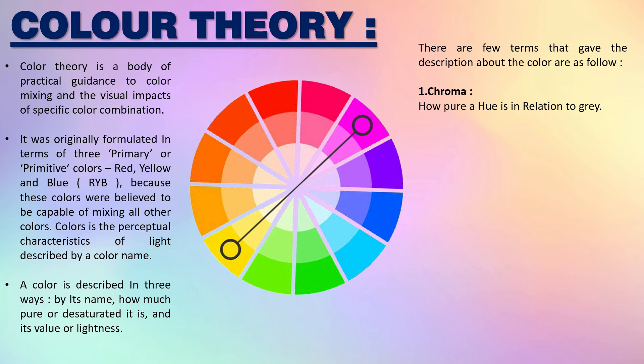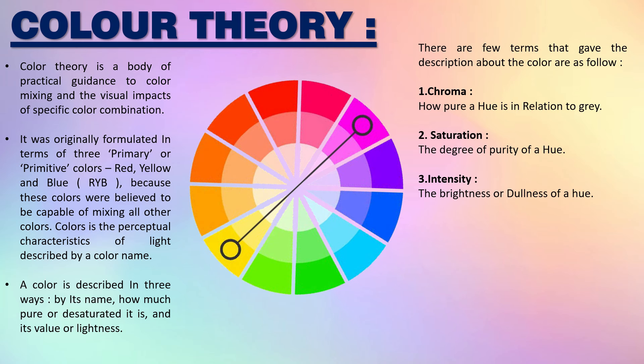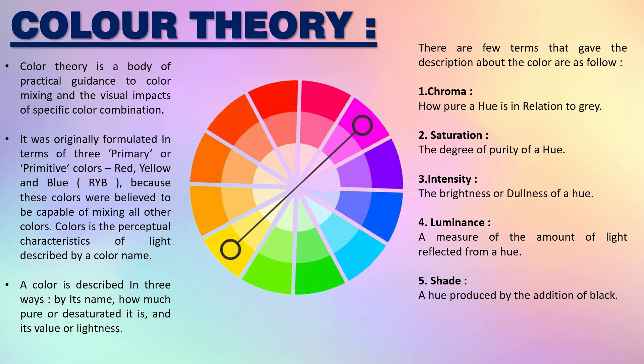Chroma: how pure a hue is in relation to gray. Then comes saturation: the degree of purity of a hue. Then intensity: the brightness or dullness of a hue. Then luminance: a measure of the amount of light reflected from a hue. Shade: a hue produced by the addition of black. And a tint: a hue produced by the addition of white.